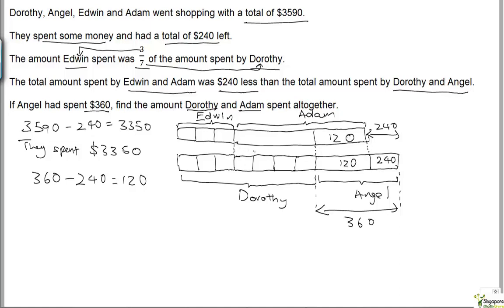By comparison, this is also $120. We've got 4 units here, so this has to equal 4 units. Let's draw 4 units here for Adam.